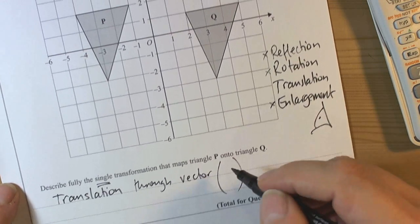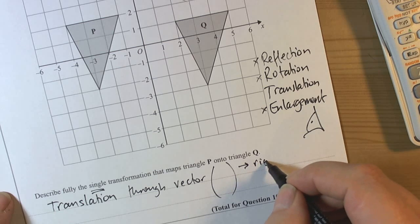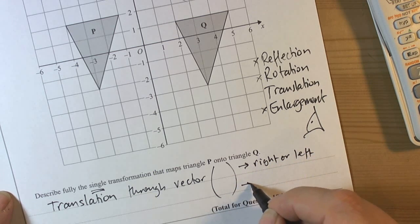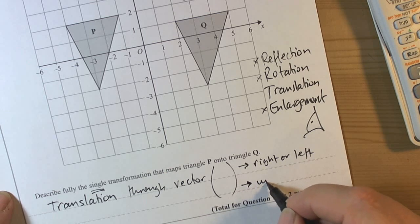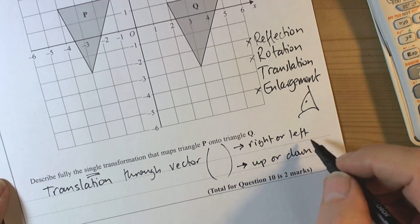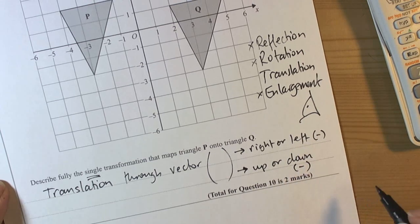Now a vector is two numbers where the top number tells you to go right or left, and the bottom number tells you to go up or down. And if it's left it will be negative, and if it's down it will be negative.